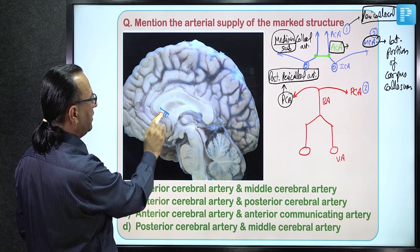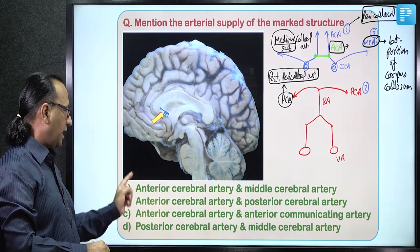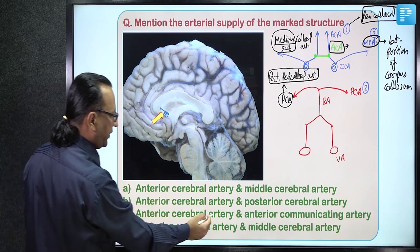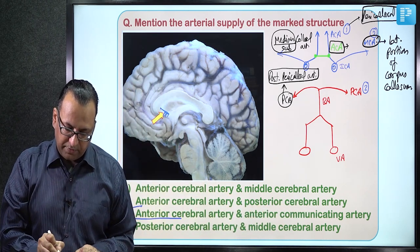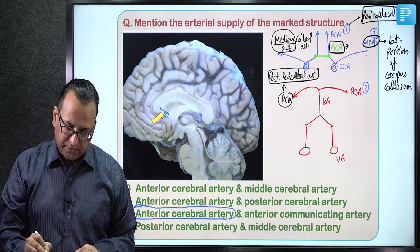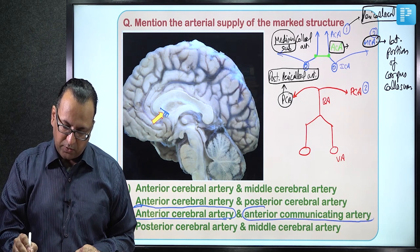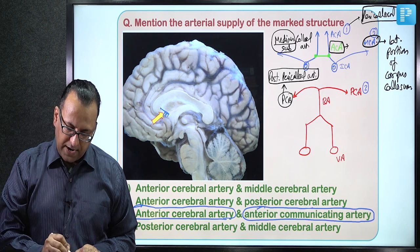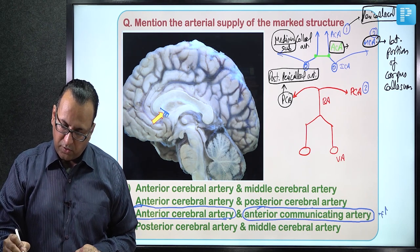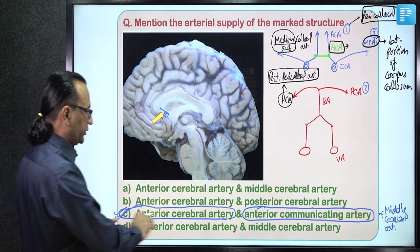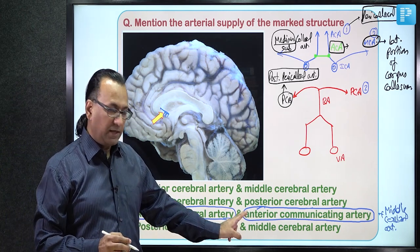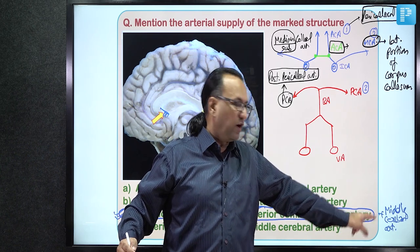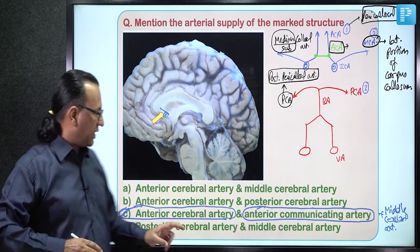The anterior cerebral artery gives the pericallosal artery supplying the anterior corpus callosum, and the anterior communicating artery gives the subcallosal artery as additional contribution. Middle cerebral artery is not included as a listed answer option, and most textbooks mention only these two arteries for the rostrum supply. Final answer: Choice C.